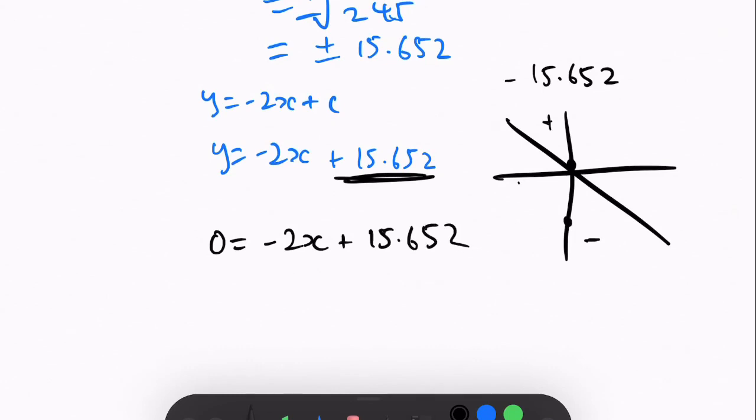So we get 0 equals minus 2x plus 15.652, and then we should get minus 15.652 divided by minus 2 equals x, because you move that over, and then you divide by negative 2,